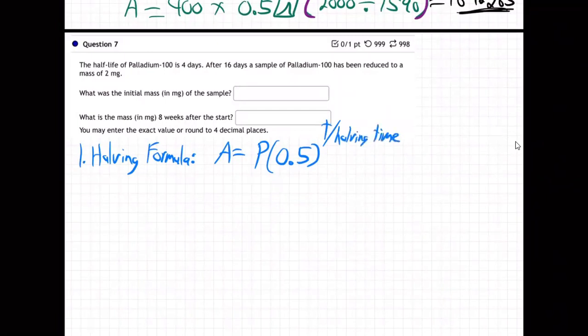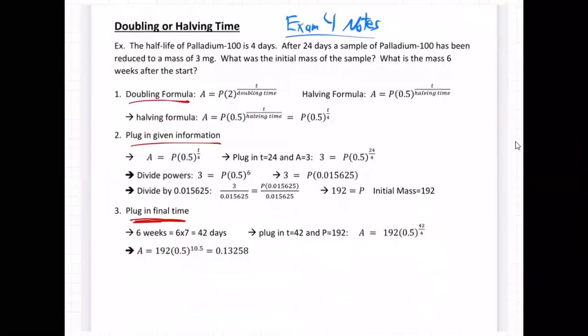It tells us four days is the half-life time, so that goes right there. So A equals P times 0.5 to the T over 4. There's our formula. Step two: plug in the given information.